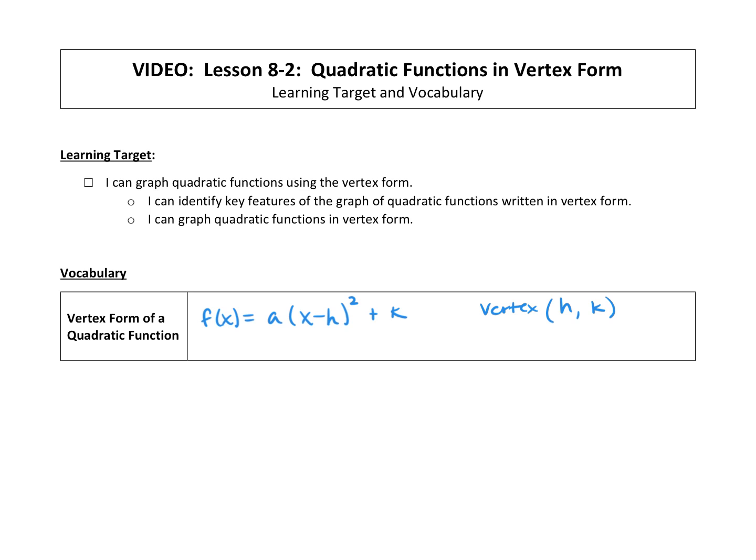Our axis of symmetry will be x equals whatever the x-coordinate of your vertex is, so x = h.